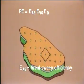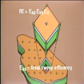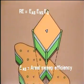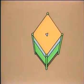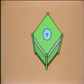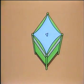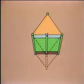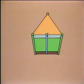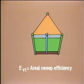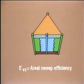The aerial sweep efficiency, E sub AS, is the fractional area of the reservoir that is contacted by the displacing fluid. The vertical sweep efficiency, E sub VS, is the fraction of the reservoir's vertical cross-section that is contacted by the displacing fluid.